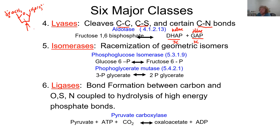Class five is the isomerases, responsible for the interconversion of geometric isomers. Examples include phosphoglucose isomerase, which takes glucose 6-phosphate and rearranges the carbons to make fructose 6-phosphate, and phosphoglycerate mutase, which takes 3-phosphoglycerate and moves a phosphate group from carbon three to carbon two — simply rearranging the atoms of a particular molecule.